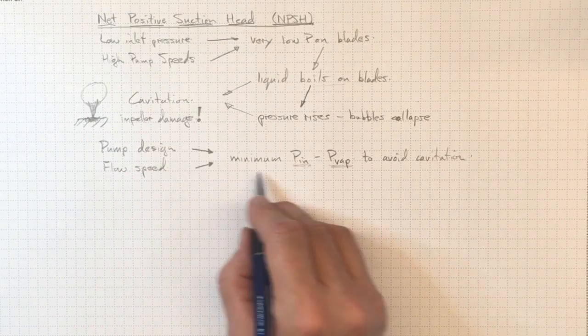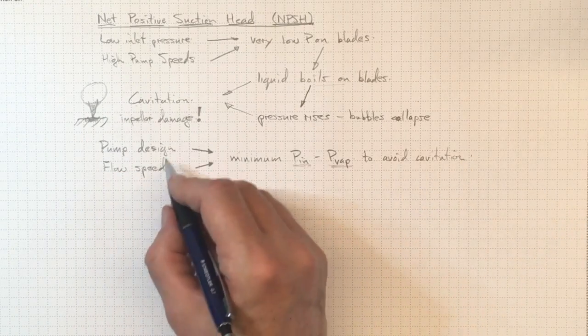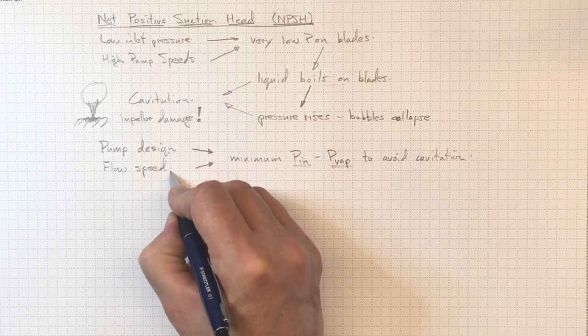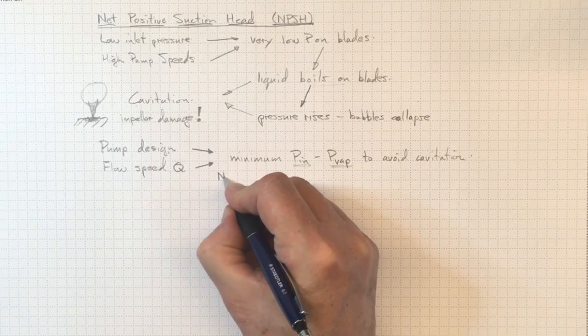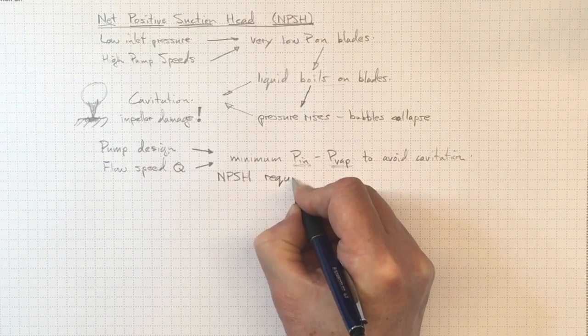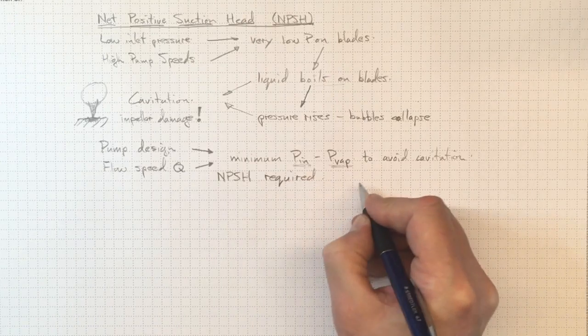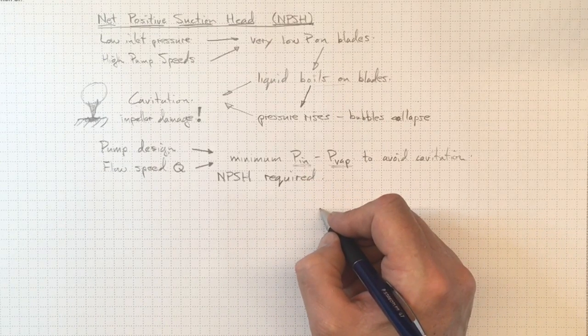The manufacturer will specify what this minimum is in order to avoid cavitation for a particular pump design at a particular flow rate as the NPSH, the net positive suction head required. And as long as you meet that requirement, then things will be okay.